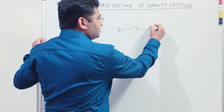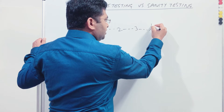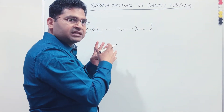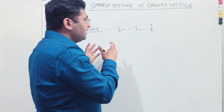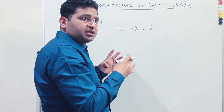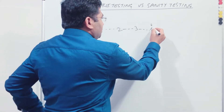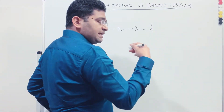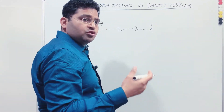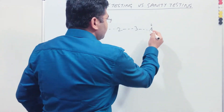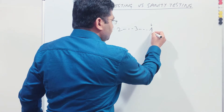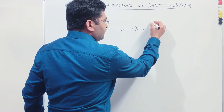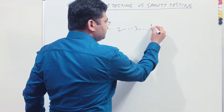Say for example in build 4, you raise a couple of defects. You are doing testing in each and every build and raising defects. Once a test case fails, you raise a defect — so in build 4 you've raised a couple of defects.